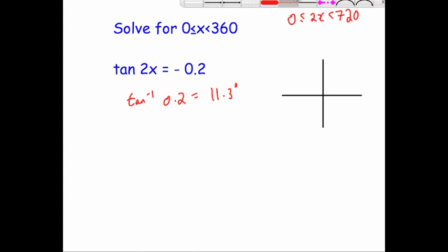Let's put that into our CAST diagram. Draw the angles, and the angles between those lines and the x-axis will be 11.3. So 11.3, 11.3, 11.3, and 11.3.